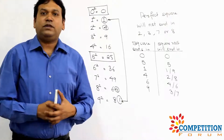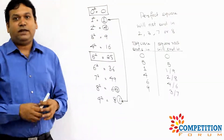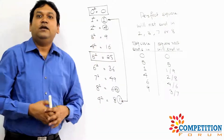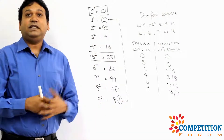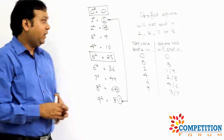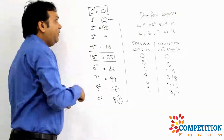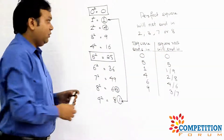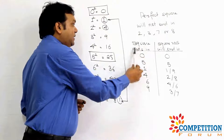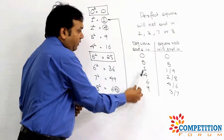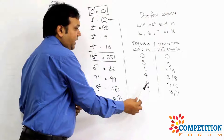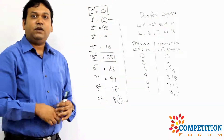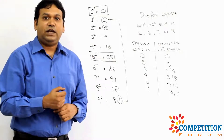To find square roots faster, two things are vital: first, know the squares of 0 to 9, which any student aiming for board exams or MBA exams must know. Second, remember that a perfect square should not end in 2, 3, 7, or 8. And finally, recall the mapping: square ends in 0 → root ends in 0; ends in 5 → root ends in 5; and so on for 1, 4, 6, and 9. Once you understand these two important things, you can learn the shortcut technique for finding square roots.